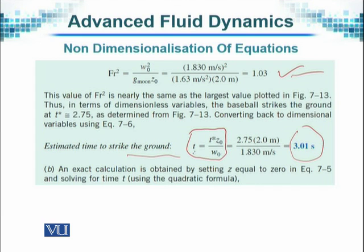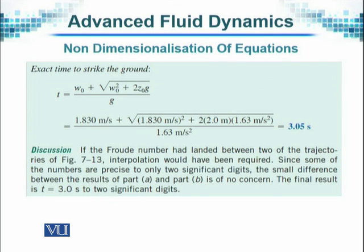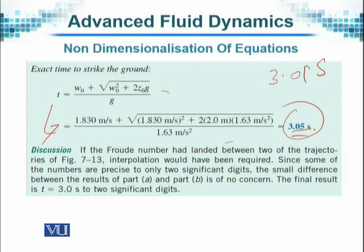This is the dimensional time. For the exact calculation in part B, we set z equal to 0: when the ball touches the ground, height z equals zero, and that gives us the value of time. The estimated time turns out to be 3.01 seconds, and when we calculate it from the equations of motion, the exact answer is 3.05 seconds. There is hardly much difference.